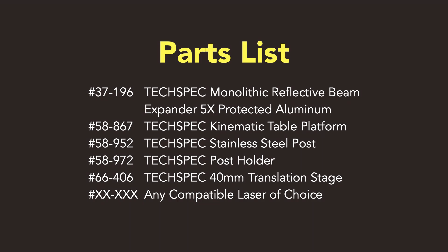In order to align the monolithic reflective beam expander, a translation stage and a kinematic mount are required. When combined, they will give you three degrees of freedom.